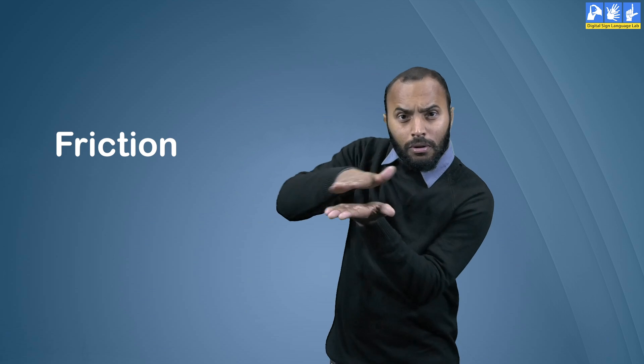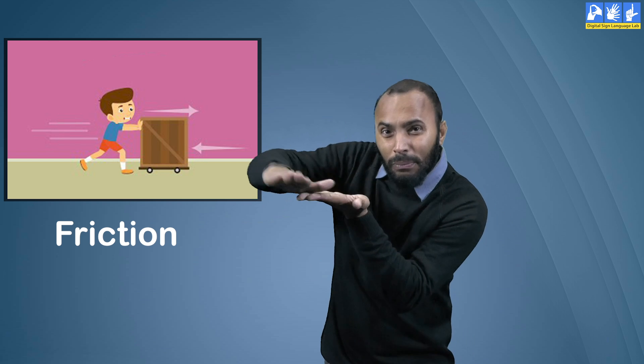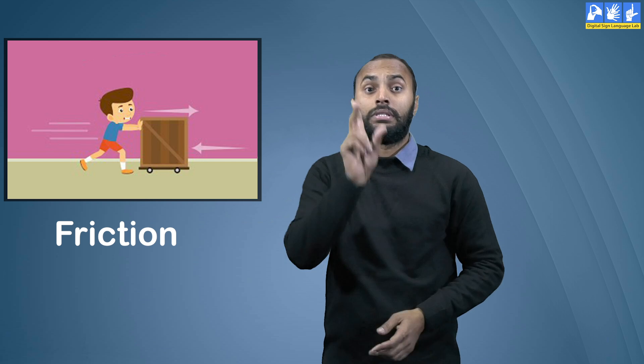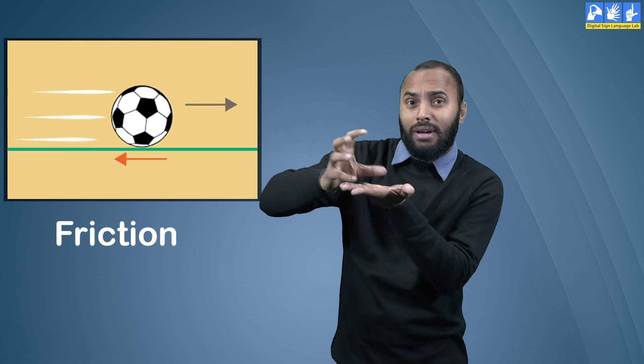This word can be explained as rubbing off one object or surface against another. For example, sliding a table on a surface or a ball rolling on the surface.